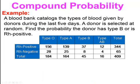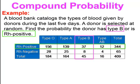Let's do another example. A blood bank catalogs the type of blood given by donors during the last five days. A donor is selected at random. We want to find the probability the donor has type B or is RH positive. Type B is a total of 45 out of 409, and RH positive is 344 out of 409. We have an overlap of 37, meaning the 37 was added into both the total for type B (45) and the total for RH positive (344). Because it's added in both totals, you cannot include it in both probabilities.